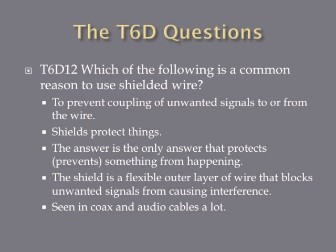Which of the following is a common reason to use shielded wire? Shielded wire prevents coupling of unwanted signals to or from the wire. If you think shields protect things, the answer is the one that protects or prevents something from happening. The shield is a flexible outer layer — sometimes a woven fabric of wire — surrounding an inner core, preventing unwanted signals from being emitted from or received into that wire. You see this in coax and many audio cables.